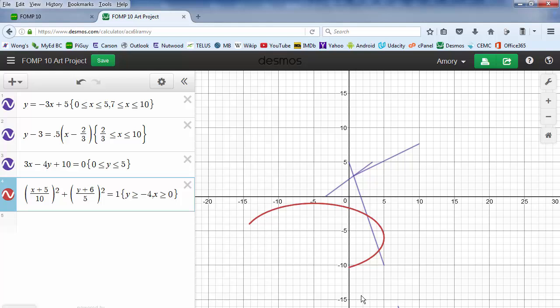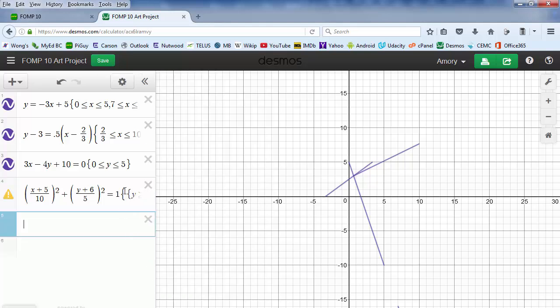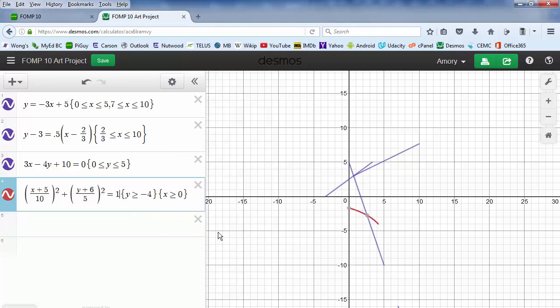It puts an OR condition for both domain and range, so it combines them together. But if you want a domain AND range as a restriction, just enter separate curly brackets. We have one bracket here, one set here, and one set here, and it's an AND condition. It makes sure that y is greater than or equal to negative 4 and x is greater than 0.